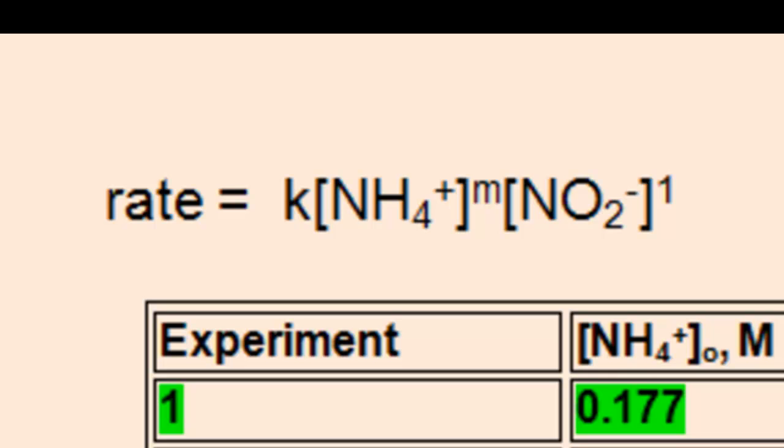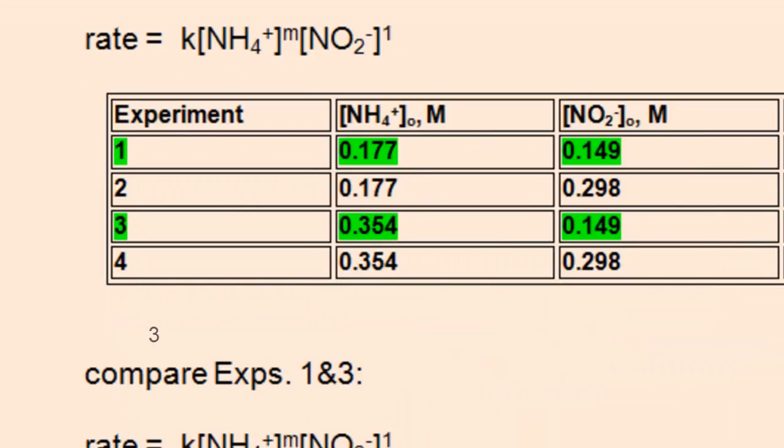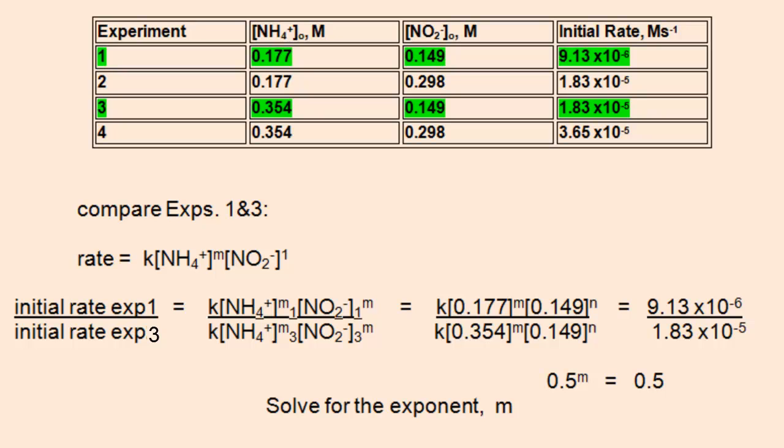Now we could rewrite our rate law as rate equals k times the concentration of ammonium to the m power times nitrite raised to the first power. Next we'll determine m, the exponent for ammonium, using the same process as we used for the exponent for nitrite.